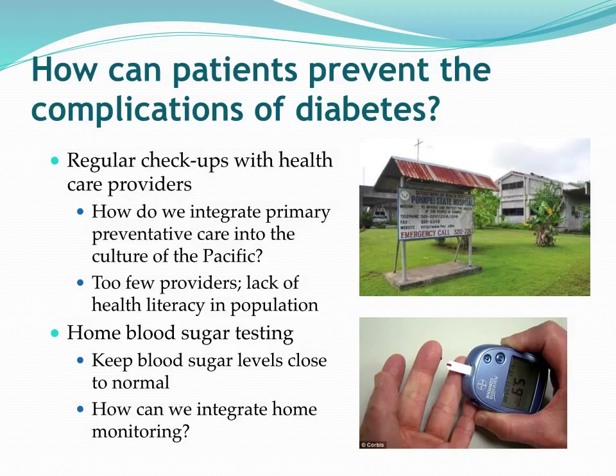We can teach people to recognize mental confusion and slowness as side effects of hyperglycemia, and we can do that with their family and friends as well.